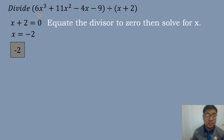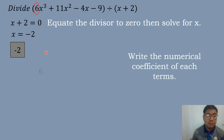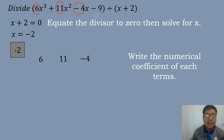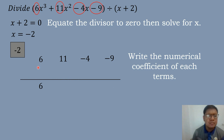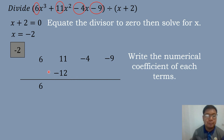The numerical coefficient of our cubic term is positive 6, so we write positive 6 here. The numerical coefficient of our quadratic term is 11, the numerical coefficient of our linear term is negative 4, and the numerical coefficient of the constant term is negative 9. Then we draw a line, bring down 6, and multiply 6 times negative 2. The answer is negative 12, and then we perform addition.